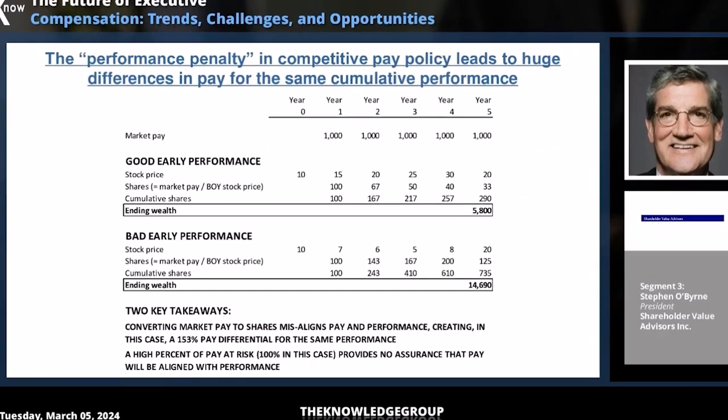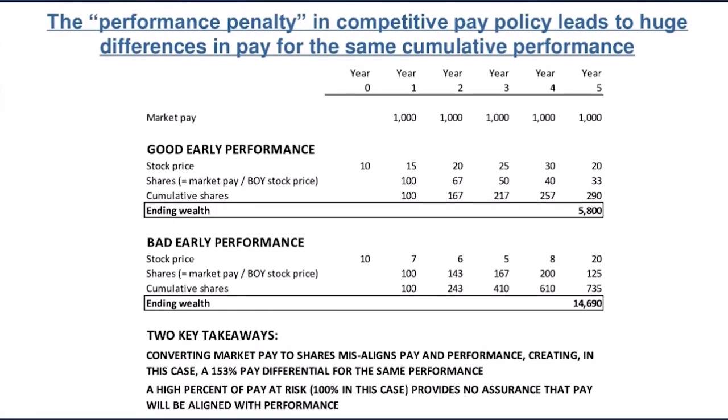In both scenarios, we get 100 shares in year one because the beginning stock price is 10. But then for good early performance, as the stock price rises, when the stock price at the end of year two is 20, the number of shares granted falls to 50. Then it falls to 40 in year four and even 33 in year five.